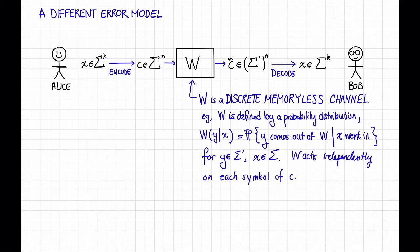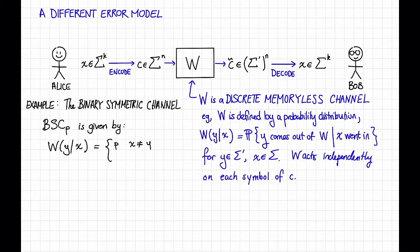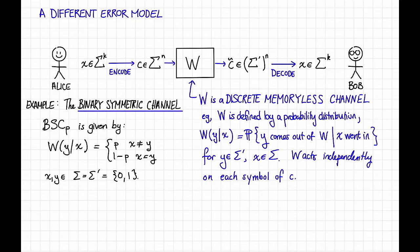Let's see some examples. Our first example is the binary symmetric channel. I'm going to denote this BSC sub p, where p is a parameter between 0 and 1. This channel is given by the following probability distribution: the probability that y comes out of the channel given that x goes into it is equal to p if x is not equal to y, and 1 minus p if x is equal to y, where x and y are both in the alphabet {0, 1}. That is, every single bit of c that goes into w is flipped independently with probability p, and stays the same with probability 1 minus p.